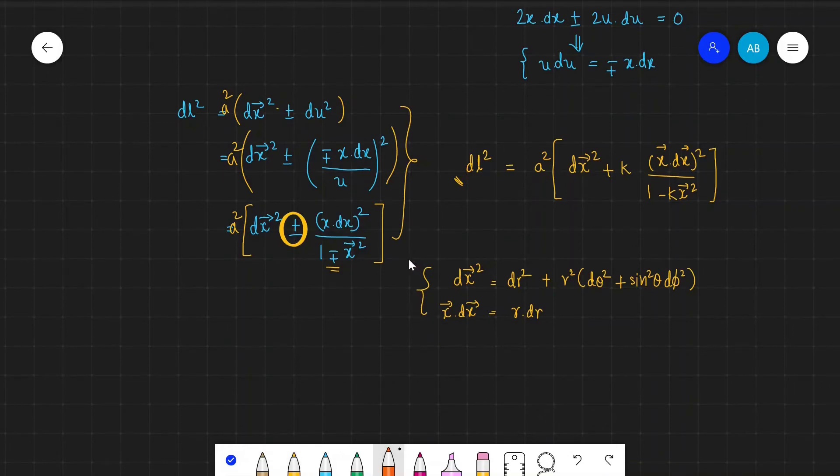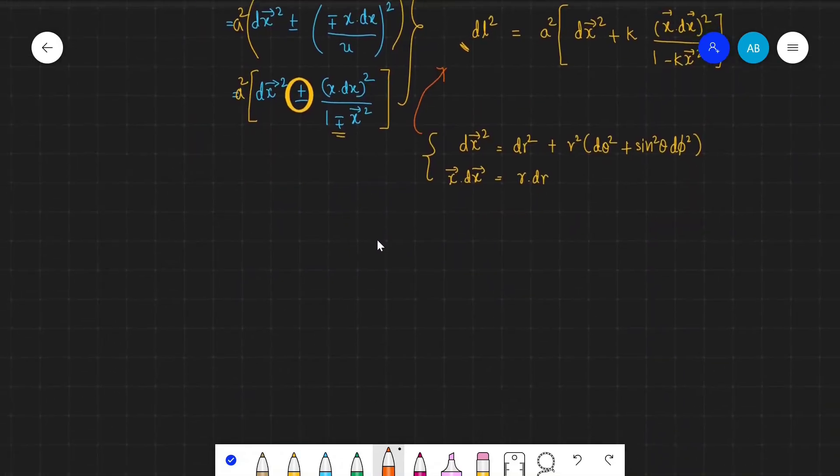Putting this here gives us dl² equals a² multiplied by — the first part is dx² so we write dr² — this part plus r² times dθ² plus...